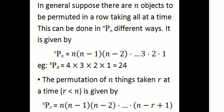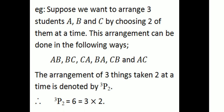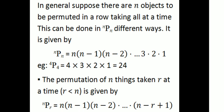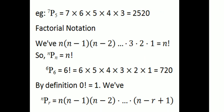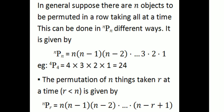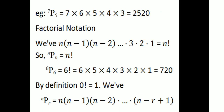The permutation of n things taken r at a time — when r is less than n — is given by nPr = n into (n−1) into (n−2) into ... into (n−r+1). For example, 3P2 = 3 into 2 = 6. And 7P5 = 7 into 6 into 5 into 4 into 3, which equals 2520.